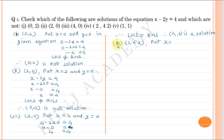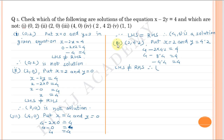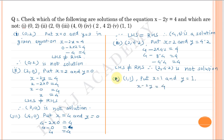Number 4: put x equal to 2 and y equal to 4.2. 4 minus 2 into 4.2 equals 4 — LHS is not equal to RHS, therefore (2, 4.2) is not a solution. Number 5: put x equal to 1 and y equal to 1. LHS is not equal to RHS, therefore (1, 1) is not a solution.